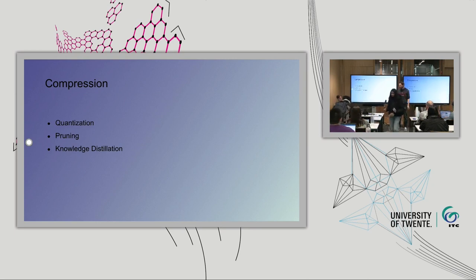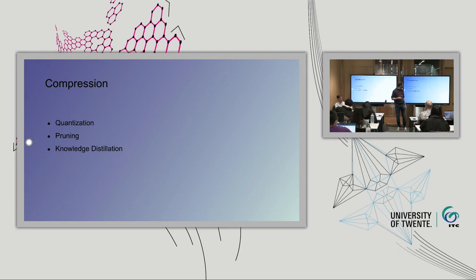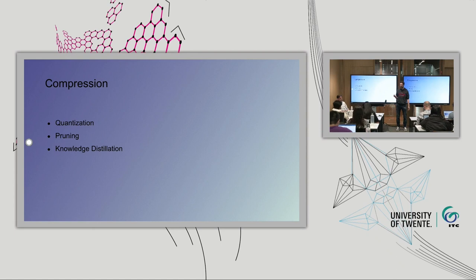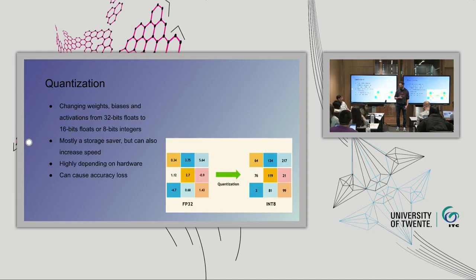Now on to the more interesting part: compression. In AI Minify we mostly do quantization, pruning, some other things, and we're also very interested in knowledge distillation. However, because we want an automated pipeline where people just put in their neural network and get a compressed one out, we haven't been able to implement knowledge distillation well yet because it requires a lot of human input.